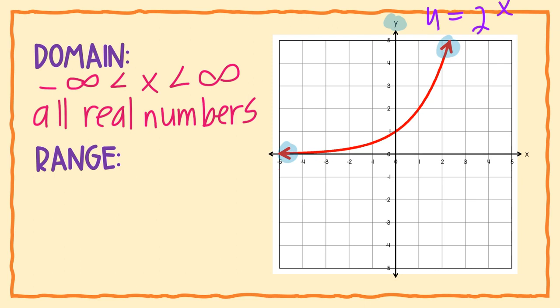The arrow on the left is not going down — it's just going sideways forever. So the line keeps going this way but never actually goes down. Looking at the y axis, that lower boundary is the number 0, which is our asymptote.